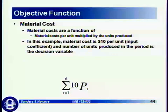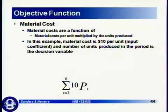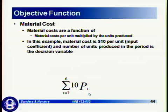Material cost is explicitly included in this calculation of total cost. These are the material cost per unit multiplied by units produced — the variable cost portion that does not include overhead or labor cost, which are accounted for separately. In this example, the aggregate unit material cost is $10 per unit for the gardening tool. That is an input coefficient, and the number of units produced in the period is the decision variable.